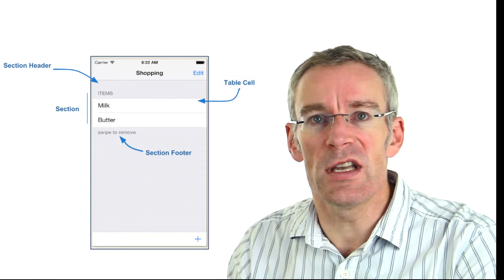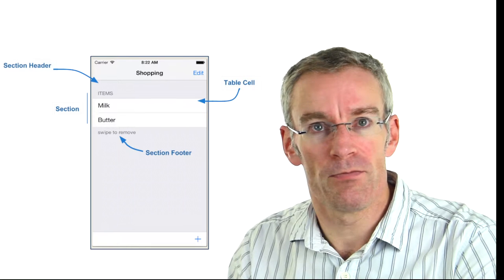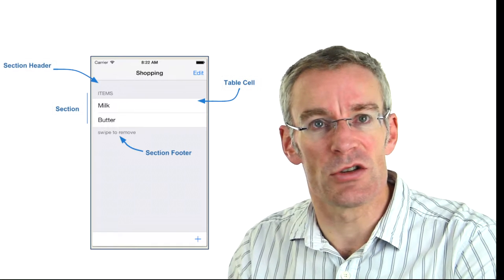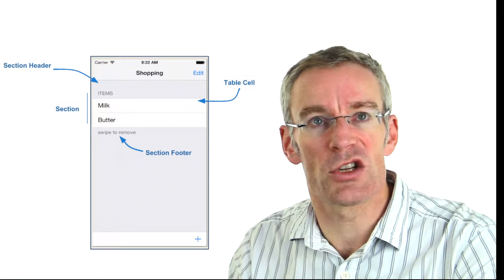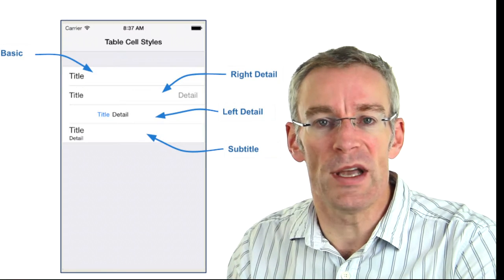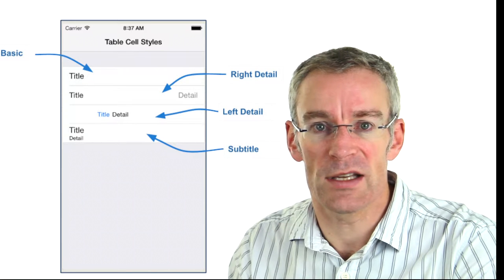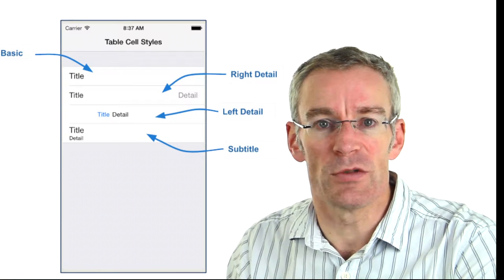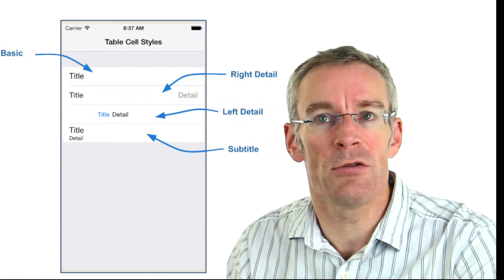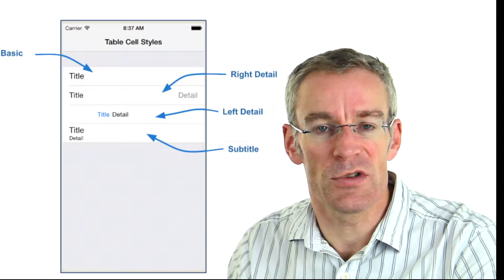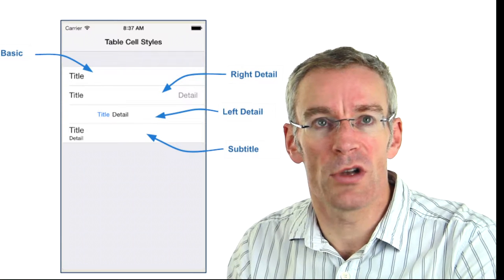Let's look at some of the table view elements. Each row is called a table cell, and table cells are arranged into sections. Each section can have an optional section header and/or a section footer. When you create your table views you can choose one of a predefined set of cell styles: the standard one is called Basic, which contains a title text. Then we have three variations with a title and detail — right detail, left detail, and a subtitle variant — but you can also create your own custom cell styles.